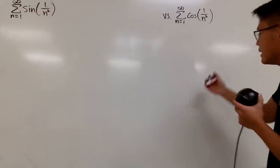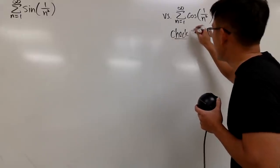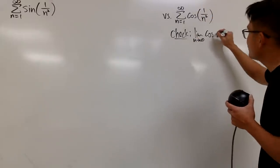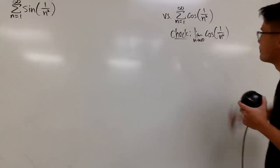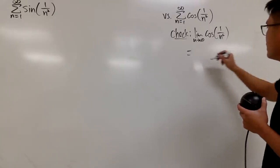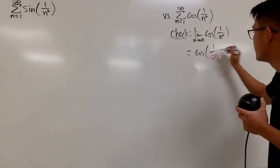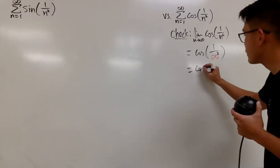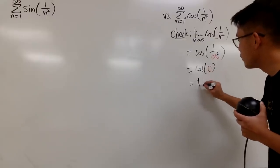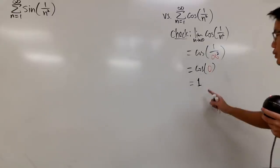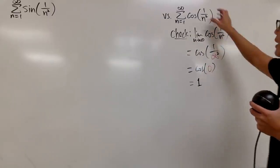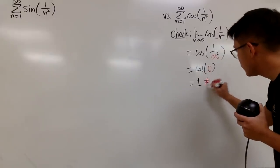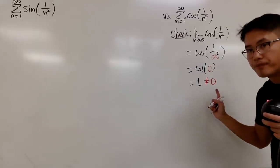Let's go ahead and take the limit. I will take the limit as n goes to infinity of a_n, which is cosine of 1 over n squared. To do this limit, you can just put infinity in. You get cosine of 1 over infinity squared. We know infinity squared is infinity, 1 over infinity is 0, so you have cosine of 0, and you end up with 1. You have to remember that this 1 is not equal to 0.